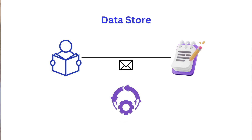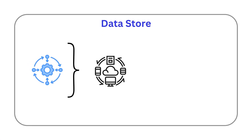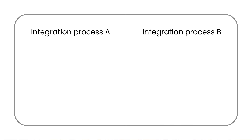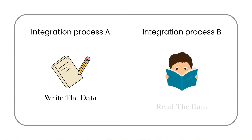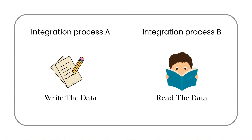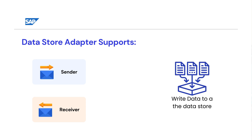By using this data store you can make the integration processes asynchronous and more decoupled. For example, you can have integration process A and integration process B. We can use this data store to write the data from integration process A, and in integration process B you can read the data from this data store to have a decoupling effect between these two integration processes. The data store adapter supports both sender-side communication and receiver-side communication, which means you can read data from the data store and write data to a data store.